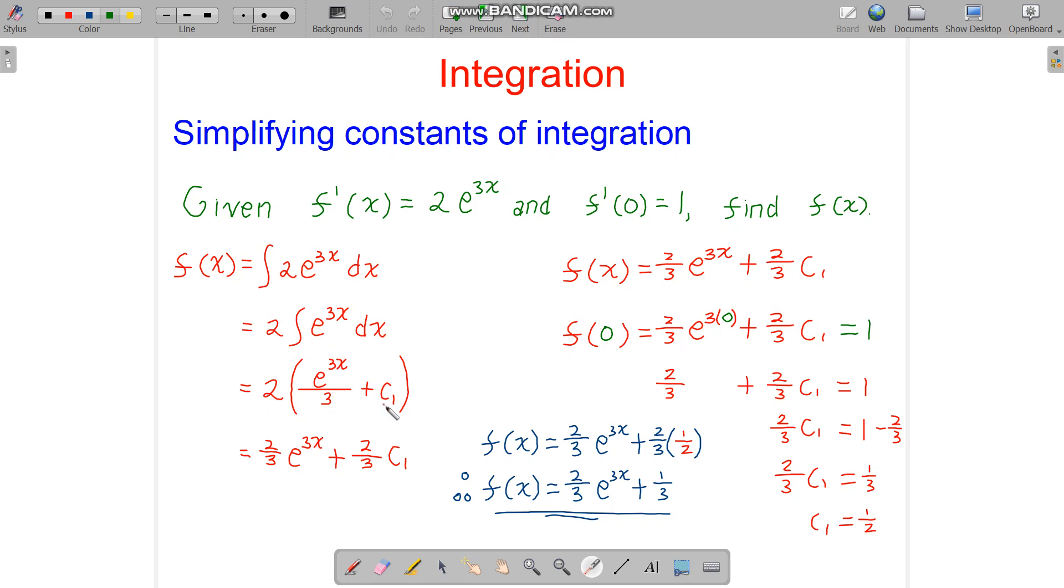Now if you expand here, you get 2/3 e to the power of 3x, plus... wait a minute, there is no 3 here, I mean this 2, and we get 2c1. Now this 2c1 here is basically just another constant.